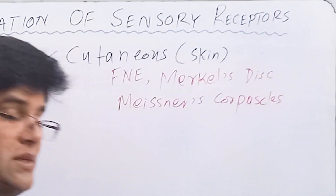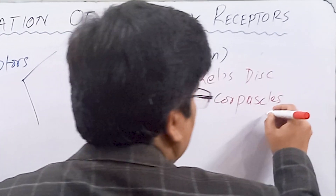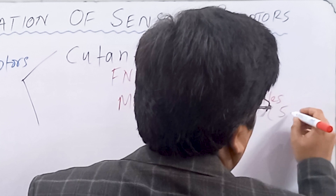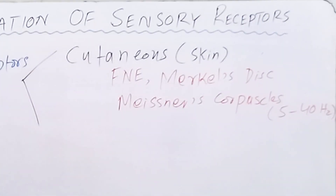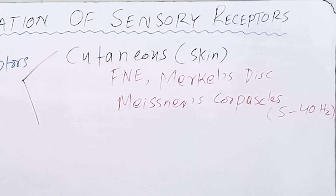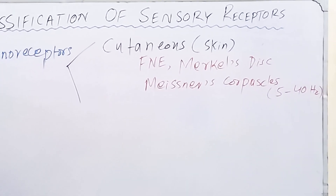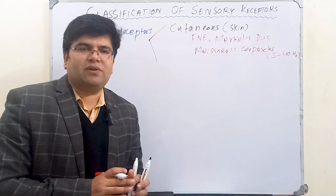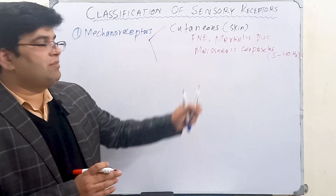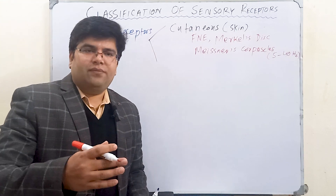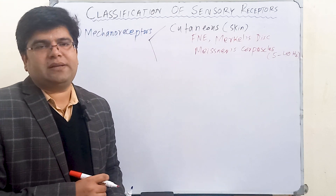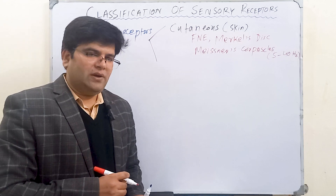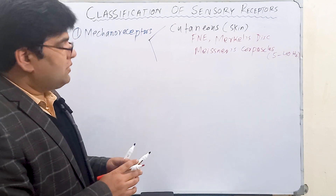Meissner's corpuscles carry a sense of vibration. The vibrations detected by Meissner's corpuscles range in frequency from 5 to 40 Hz — these are low frequency vibrations. Another kind of receptor, the Pacinian corpuscle, detects high frequency vibrations.